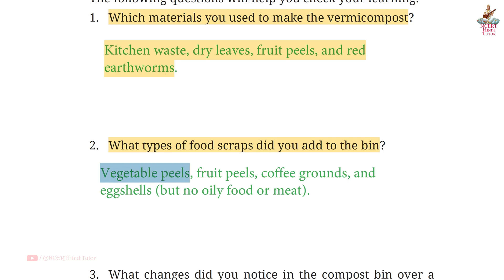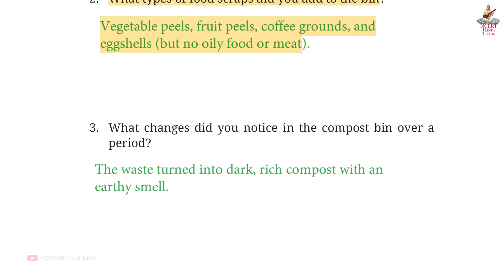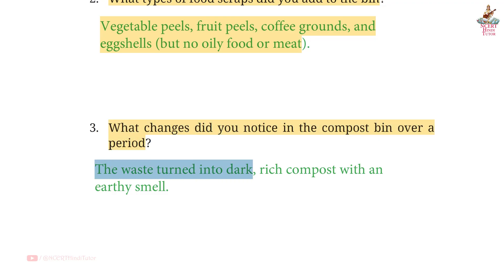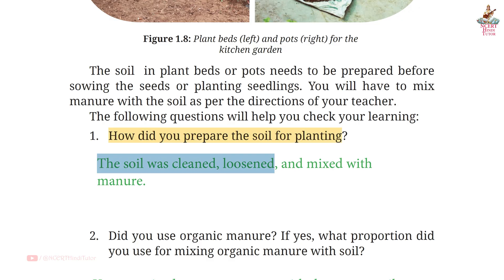Answer: Vegetable peels, fruit peels, coffee grounds, and egg shells — but no oily food or meat. Question 3: What change did you notice in the compost bin over a period? Answer: The waste turned into dark, rich compost with an earthy smell.